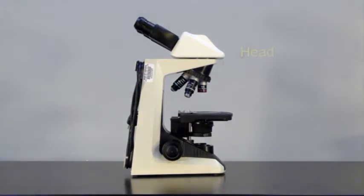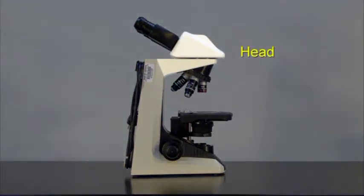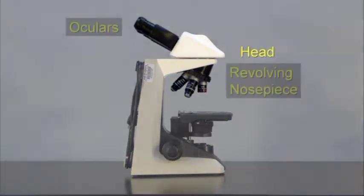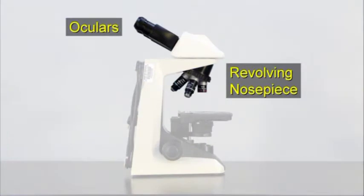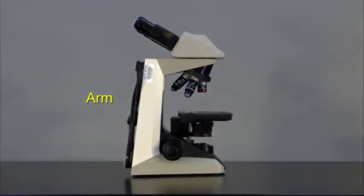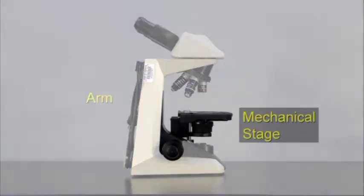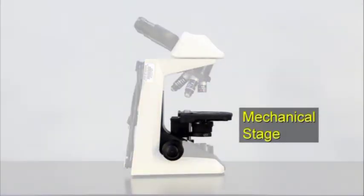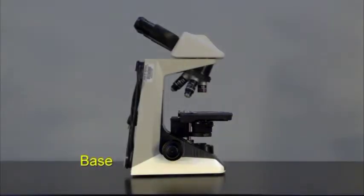The top section is the head, which supports the oculars and the revolving nose piece. The arm is the section that supports the head. It also supports the mechanical stage, which holds the slide. The section at the bottom is called the base.